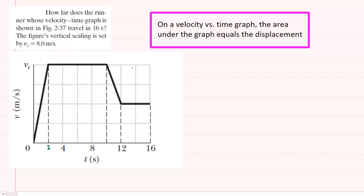In order to determine how far the runner travels in 16 seconds based on this graph, we have to keep in mind an idea outlined here in this purple box. It states that on a velocity versus time graph, the area under the graph will equal the displacement.